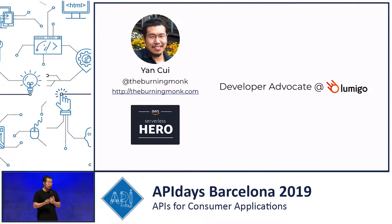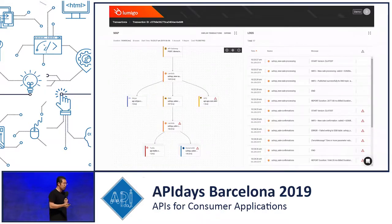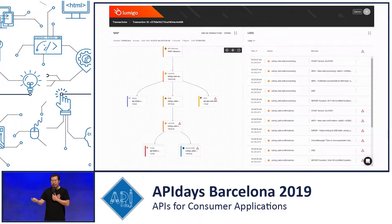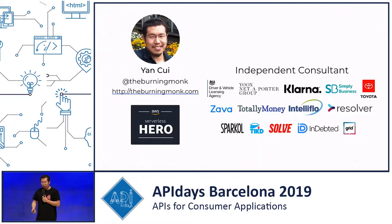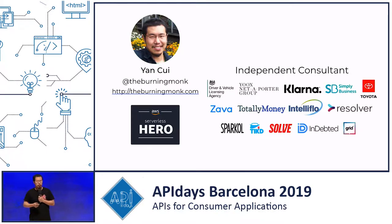Right now I'm spending some of my time working with Lumigo as a developer advocate. Lumigo is a company that's building a very powerful troubleshooting platform for serverless applications, especially when you're doing lots of async stuff. When you've got lots of messages flying around, it becomes much more difficult to track them and understand the health of individual user transactions.